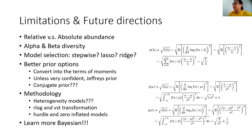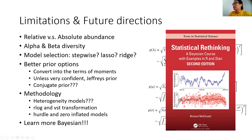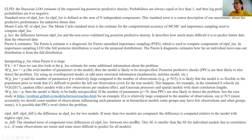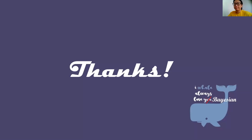Here are two possible priors that are generally used: Jeffrey's prior, which is also non-informative. I think there is so much more I need to learn about Bayesian methods to go further. Here is a really nice book I learned a lot from, and here are some terminologies. I think I'm done — thanks.